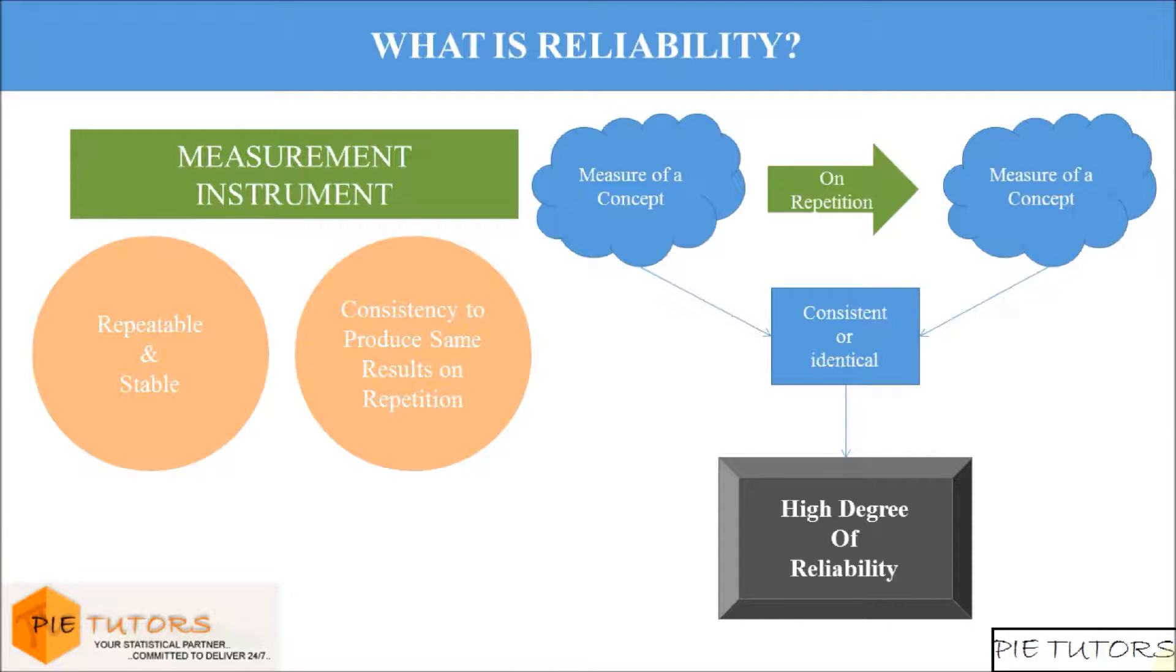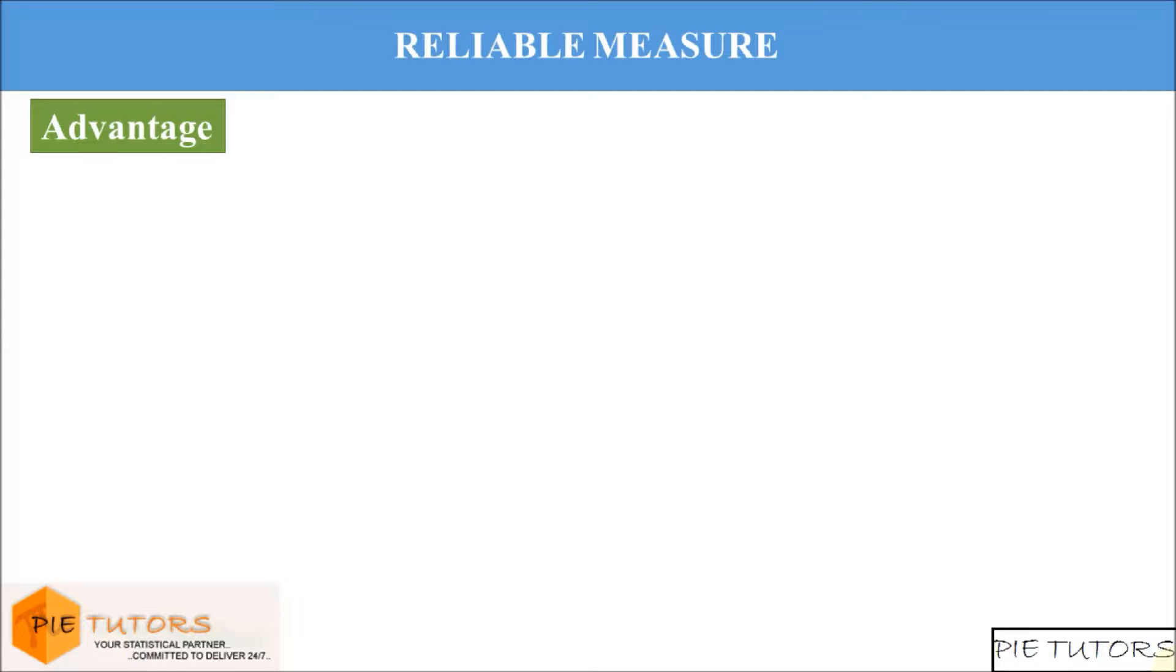If the variations among repeated measures are large, then reliability is low. One of the advantages of a reliable measure is that it would return the same results from time to time, provided that the underlying phenomenon which we were measuring has not changed.